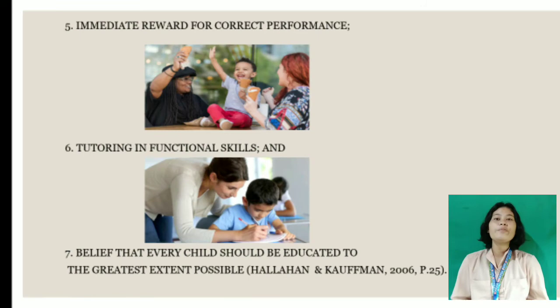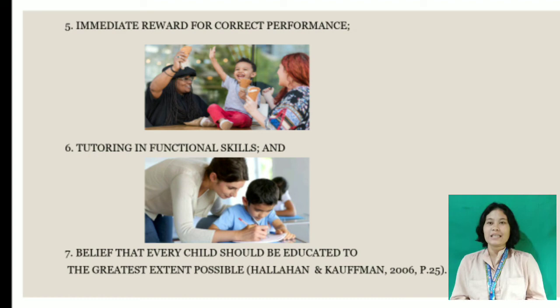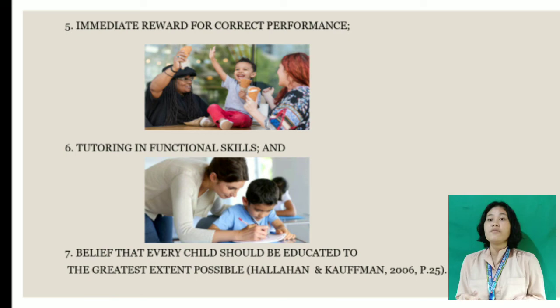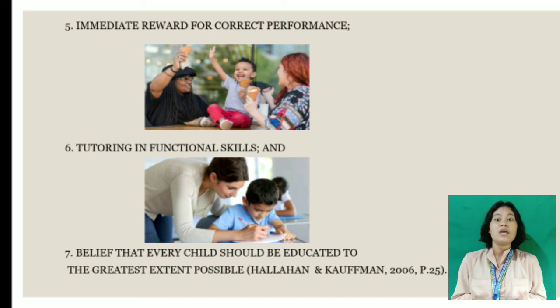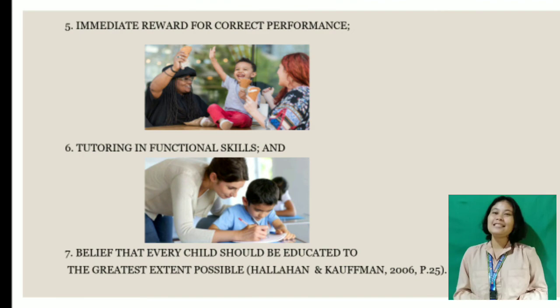Number five, immediate reward for correct performance. Immediate reward for good scores can boost student performance. Number six, tutoring and functional skills — plan to teach and support students to complete their functional skills qualifications. They will achieve this through delivering classroom and workplace-based sessions, as well as through small group, individual, and tailored one-to-one support.